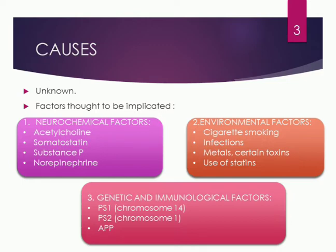Environmental factors include cigarette smoking, which has a positive effect in bringing out Alzheimer's. Infections, such as certain viral infections that can affect the brain, and exposure to metals and their toxins, certain industrial waste, and certain toxins — as well as prolonged use of certain substances — can in some individuals have a profound effect in bringing out Alzheimer's disease early in their life.